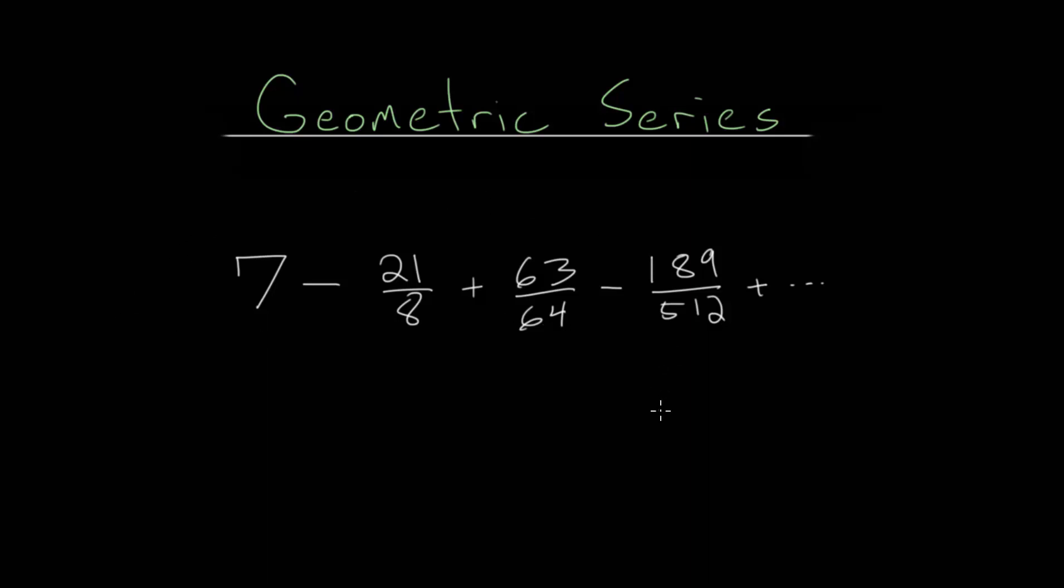specifically looking at an example problem where we have this infinite geometric series and the common ratio here, the number we multiply by to go from one term to the next, is a negative fraction. So, to figure out what this actually adds up to, we need to first figure out what the common ratio is.